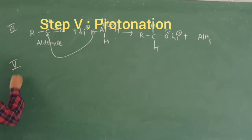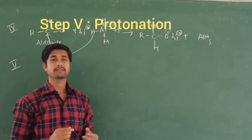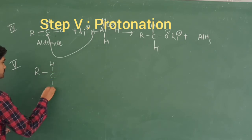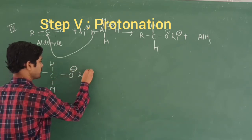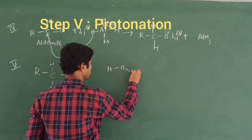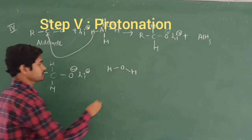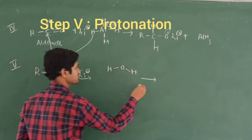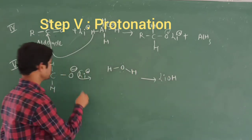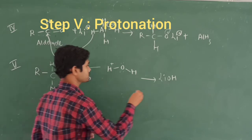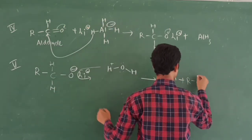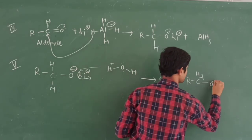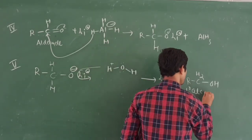The fifth step is protonation using water molecules. Taking the product from the fourth step — RCH(O⁻) Li⁺ — and adding water: the Li⁺ reacts with the OH group to form lithium hydroxide, and the O⁻ combines with H⁺ from water. The final product is RCH₂OH — a primary alcohol. This is the product of reducing a carboxylic acid.